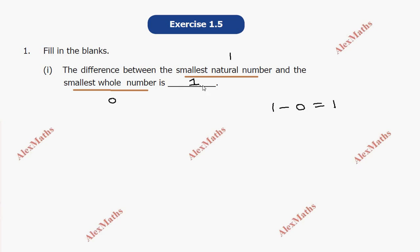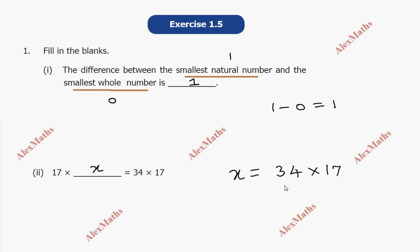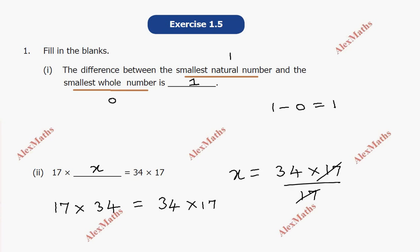For the second blank, 34 into 17 equals 17 into 34. This illustrates the commutative property of multiplication. So 34 into 17 is equal to 17 into 34 — the order can be reversed. This is the commutative property under multiplication.